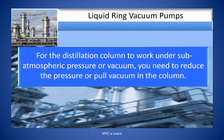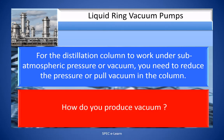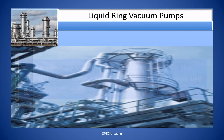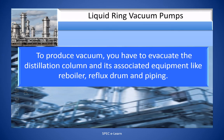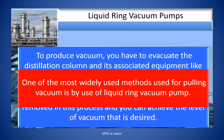For the distillation column to work under sub-atmospheric pressure or vacuum, you need to reduce the pressure or pull vacuum in the column. To produce vacuum, you have to evacuate the distillation column and its associated equipment like reboiler, reflux drum, and piping. The air and non-condensables in the system get removed in this process and you can achieve the desired level of vacuum. One of the most widely used methods for pulling vacuum is by use of a liquid ring vacuum pump.